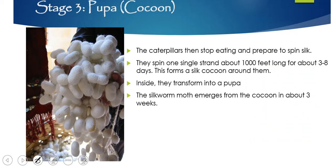Then we have the cocoon, chrysalis, or pupa stage. The caterpillars stop eating and prepare to spin the silk. They spin one single strand about 1,000 feet long over about three to eight days, and this is what forms the cocoon around them.